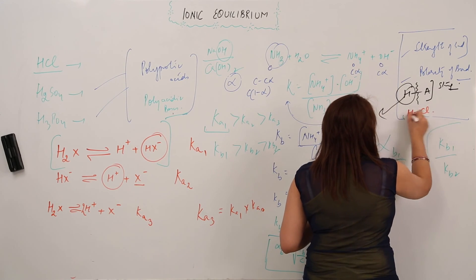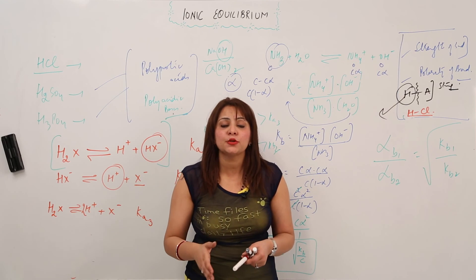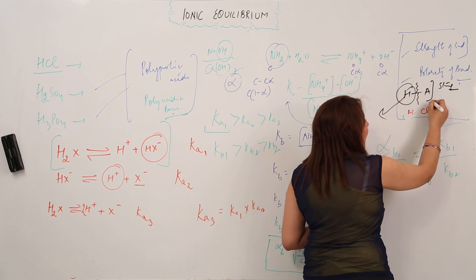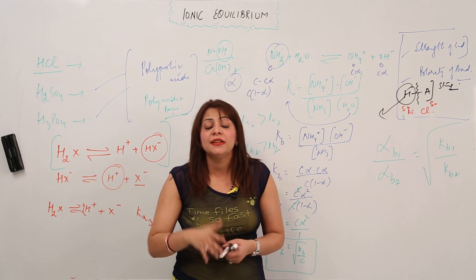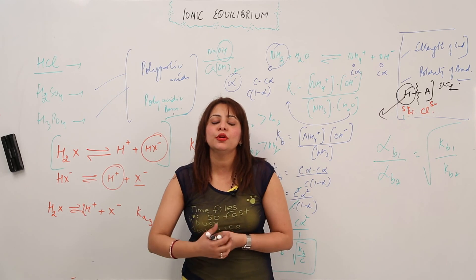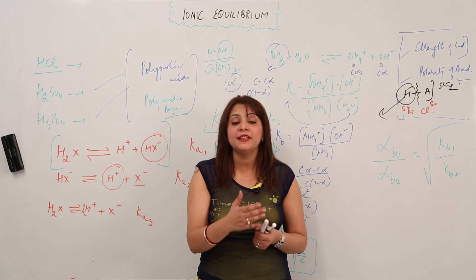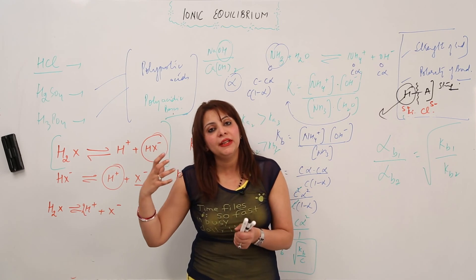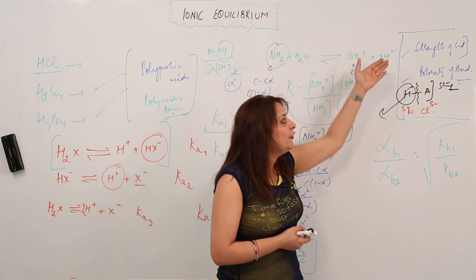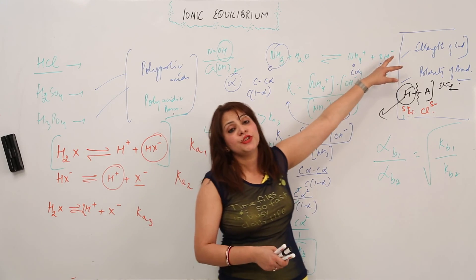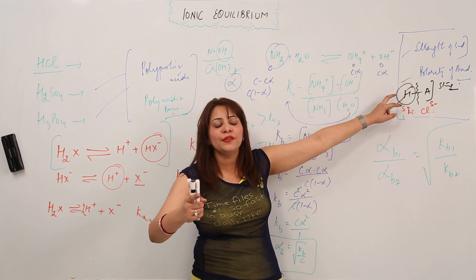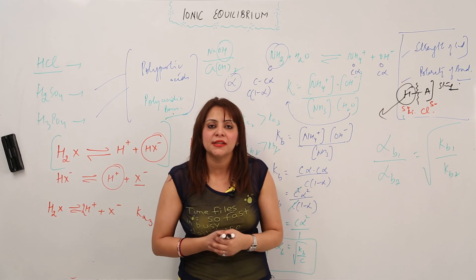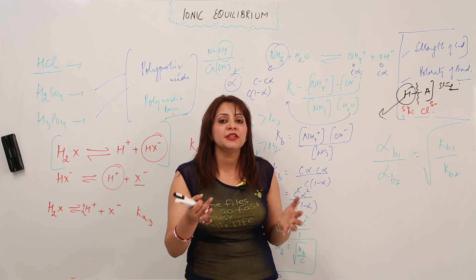The second factor is polarity. For example, in HCl, chlorine is more electronegative than hydrogen, creating a difference in electronegativity. Chlorine attracts the shared electron pair toward itself, resulting in partial negative charge on Cl and partial positive charge on H. The more polar the bond, the easier it is to donate the hydrogen ion — making it a stronger acid. Lesser electronegativity difference means less polarity, making H⁺ release more difficult and the acid weaker. These two factors — bond strength and polarity — determine whether a substance is a strong or weak acid or base.